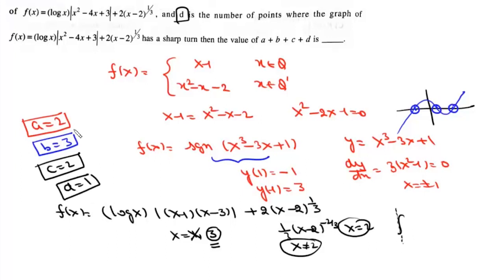We now find a + b + c + d = 2 + 3 + 2 + 1 = 8. So the answer to this question is 8.